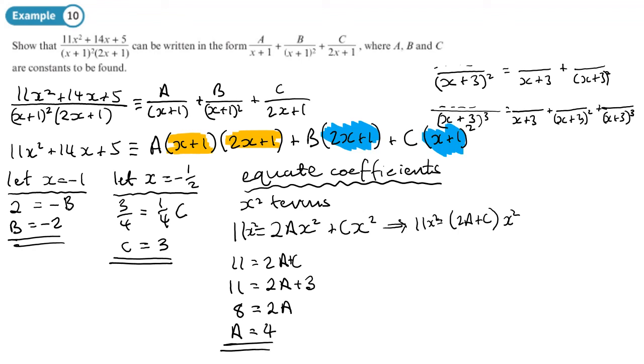So now we're ready to write our final answer. And let's write the final answer in purple. 11x squared plus 14x plus 5 over x plus 1 all squared times by 2x plus 1. That's equivalent to a, which is 4 over x plus 1, plus b is negative 2, so I'm going to write minus 2 over x plus 1 all squared. And then the last one is c, which is 3. 3 over 2x plus 1.